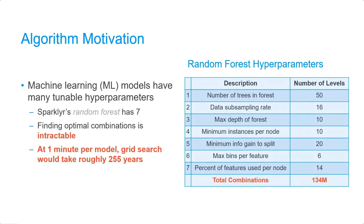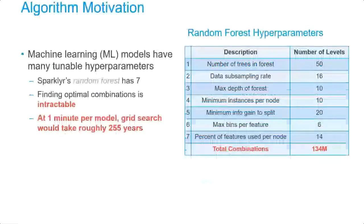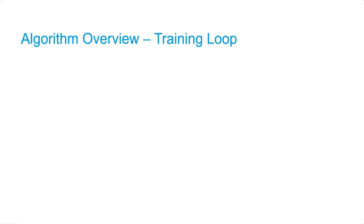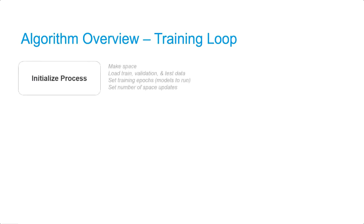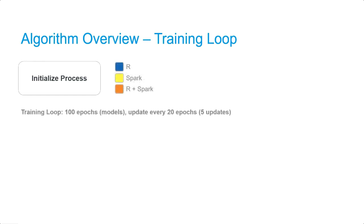Now I'm going to kick it over to Neil to discuss the algorithm. Our algorithm aims to make it feasible to search these intractable hyperparameter spaces. We start by initializing the process, which includes defining a hyperparameter space such as the one we just reviewed for a random forest, loading our data — which typically includes training, validation, and test datasets — setting the number of epochs to run, which equals the number of models the algorithm will try, and finally setting how many space updates we want to perform. The updates are how we hone in on the highest performing hyperparameters. Our example will show how the algorithm works epoch by epoch, as if we're going to run 100 models and perform 5 space updates. We'll also highlight which parts of the algorithm are performed in R, Spark, or R and Spark.